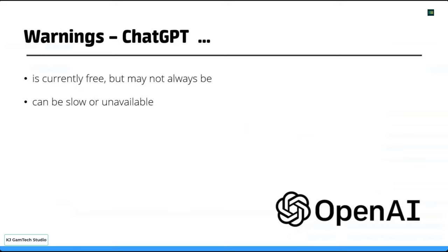It can tell you you've got to come back later, or that it's overloaded and running slowly. Bear with us if that happens during the presentation. It can also give very convincing but incorrect answers — we'll see some of those as we go through today. They also give a warning that it can produce offensive or unpleasant answers, so hopefully there'll be none of those today, but you may come across those in your own exploring.